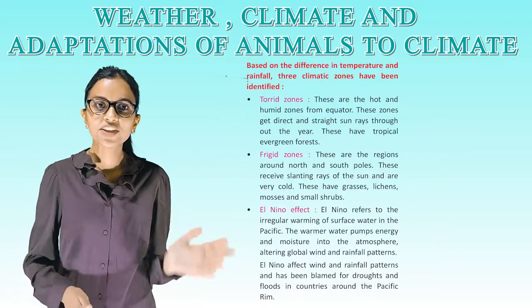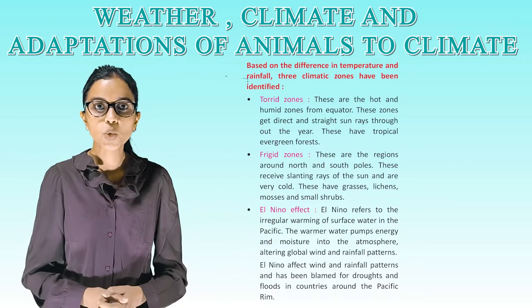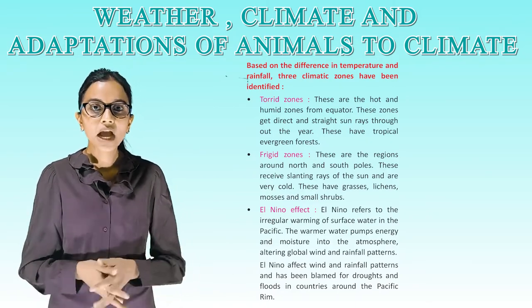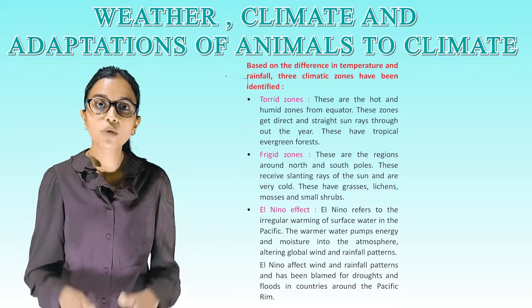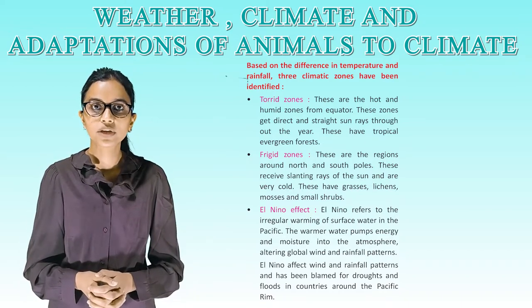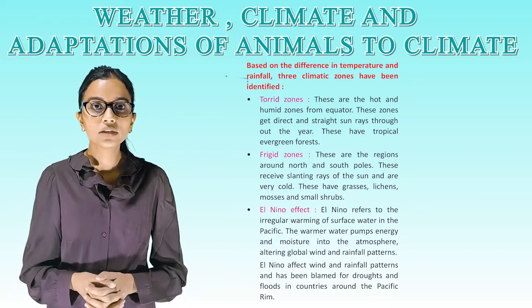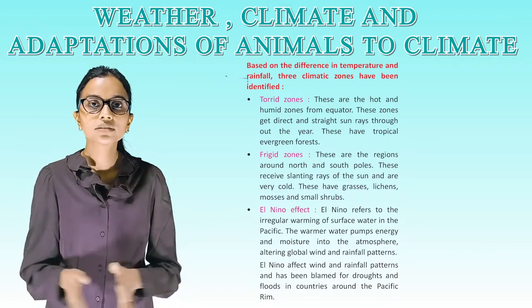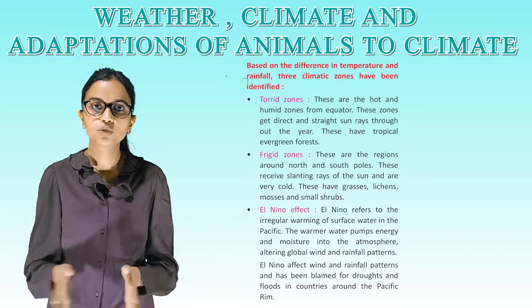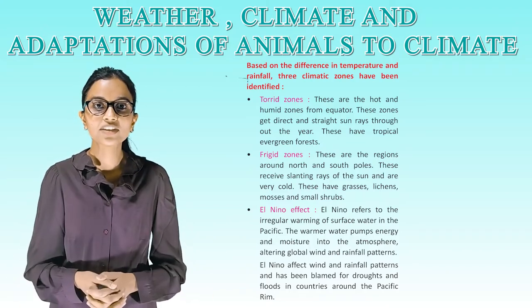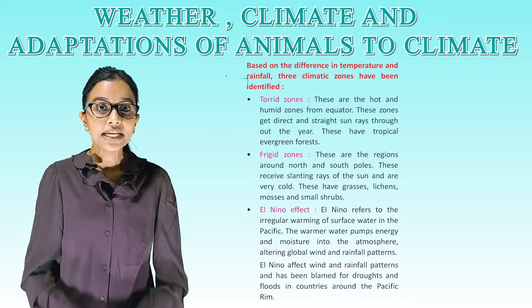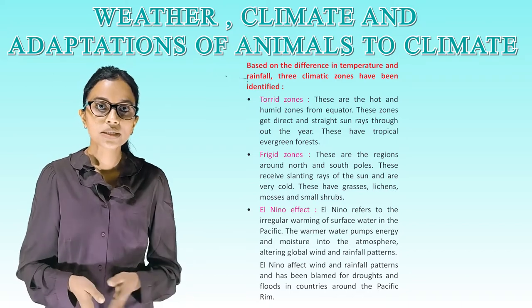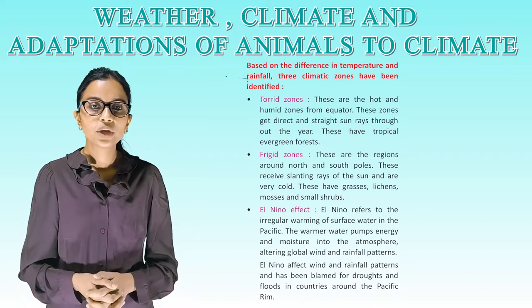Based on differences in temperature and rainfall, three climatic zones have been identified. The torrid zone consists of hot and humid zones near the equator that receive direct and straight sun rays throughout the year — these have tropical evergreen forests. The frigid zone comprises regions around the north and south poles, which receive slanting rays of the sun and are very cold — these have grasses, lichens, mosses and small shrubs.